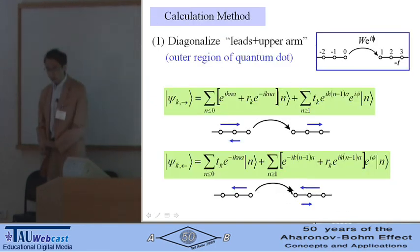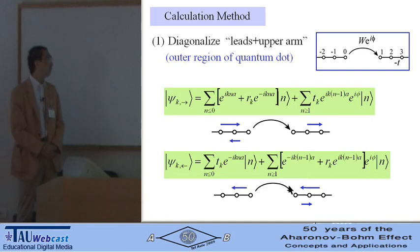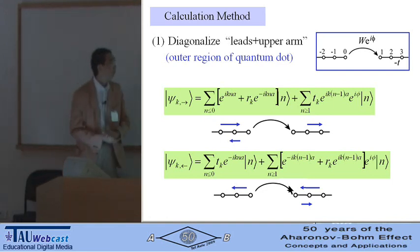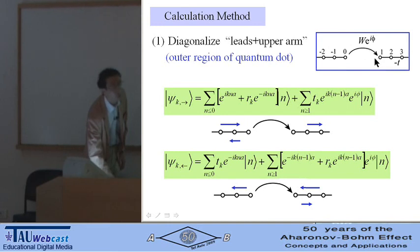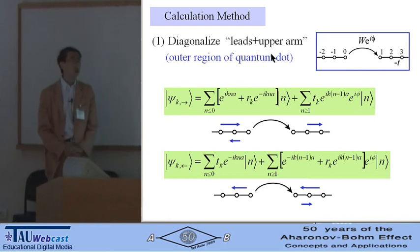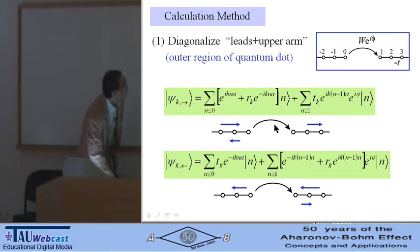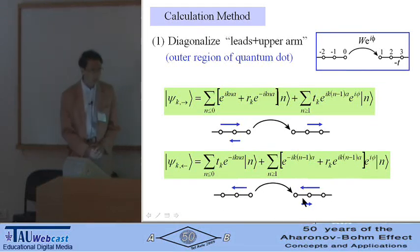The strategy of our calculation is as follows. First, we diagonalize the two leads and upper arm of the AB ring, or outer region of the quantum dot. So there are two eigenmodes. One is incident from the left, partly transmitted and partly reflected, or incident from the right, partly transmitted and partly reflected.